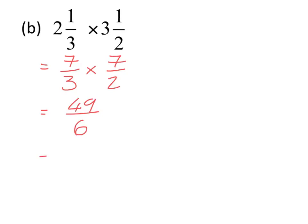So we now have 49 over 6, which is a top-heavy fraction. We need to change that to a mixed number by seeing how many times 6 goes into 49. It goes 8 times because 6 eights are 48, giving us 8 whole numbers with 1 left over. So the answer is 8 and 1 sixth.